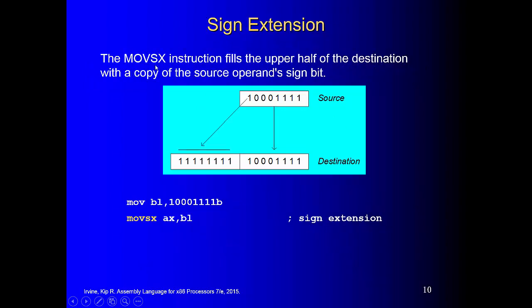Sign extension: MOVSX is another special move instruction. Sometimes you need to use this — we'll see when in later chapters. Same concept: copy from a source to a destination where the source size is smaller than the destination. You only fill half of the destination; for the upper half, you fill it with the sign bit. The leftmost bit is the sign bit of the source. In the example, copy a binary value into BL, then use move sign extension to copy BL into AX — the sign bit 1 is copied into the upper half of AX, and the destination must be a register.